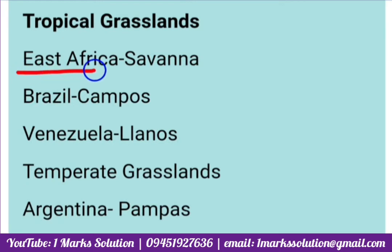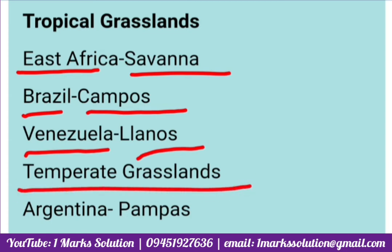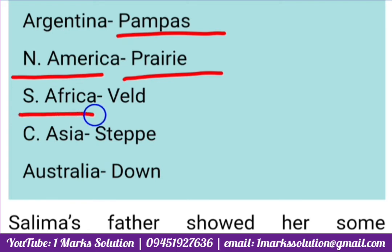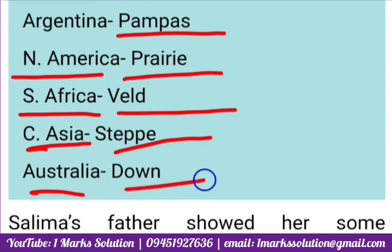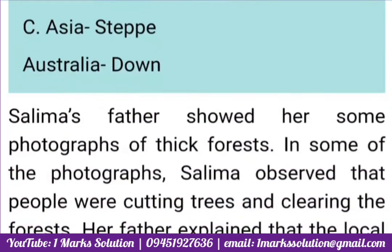In East Africa, tropical grasslands are known as Savanna. In Brazil, they are known as Llanos. In Argentina, the temperate grassland is called Pampas. In North America, they are called Prairies. In South Africa, it is called Veld. In Asia, it is called Steppe, and in Australia it is called Downs. These are the different names for temperate and tropical grasslands.